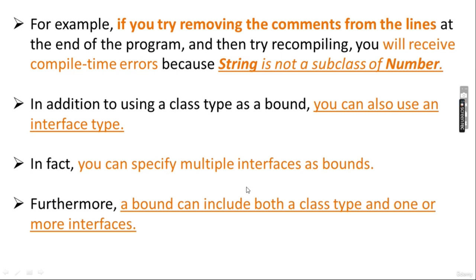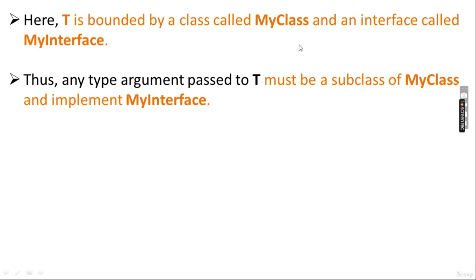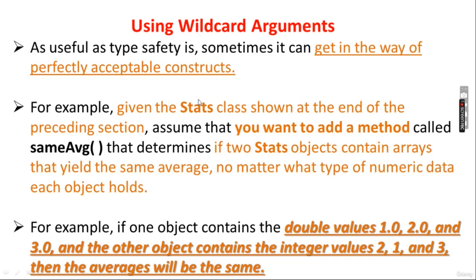In addition to using a class type as a bound, you can also use an interface type, and you can specify multiple interfaces as bounds at the same time. A bound can include both a class type and one or more interfaces — in this case the class type must be specified first. When a bound includes an interface type, only type arguments that implement that interface are legal. When specifying a bound with a class and an interface, use the & operator: for example, T extends MyClass & MyInterface.